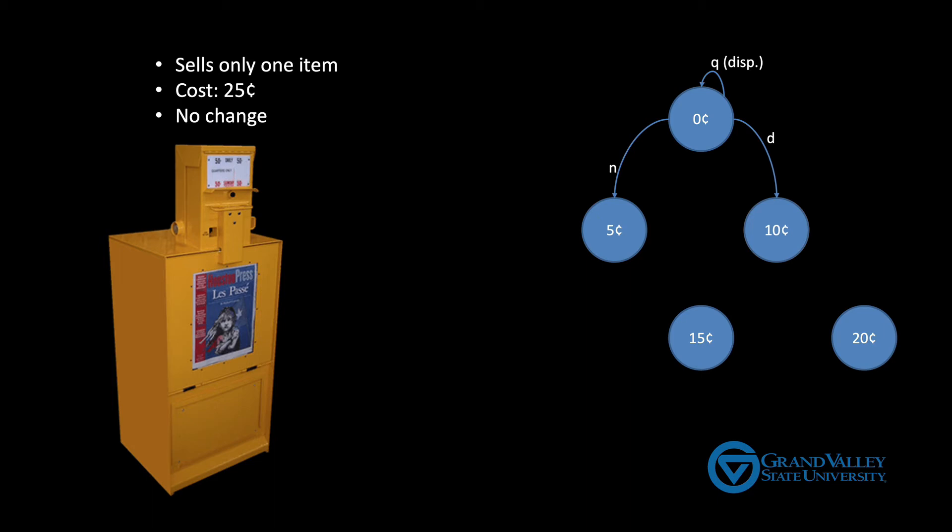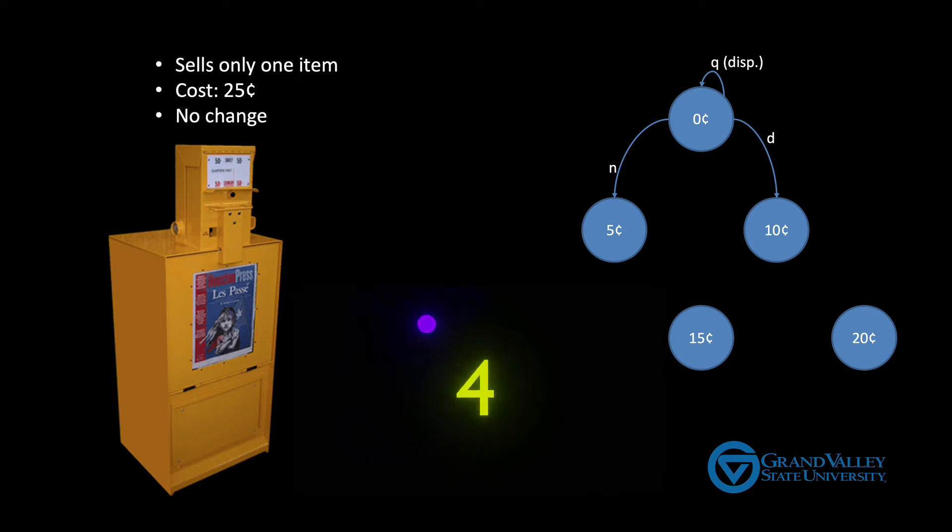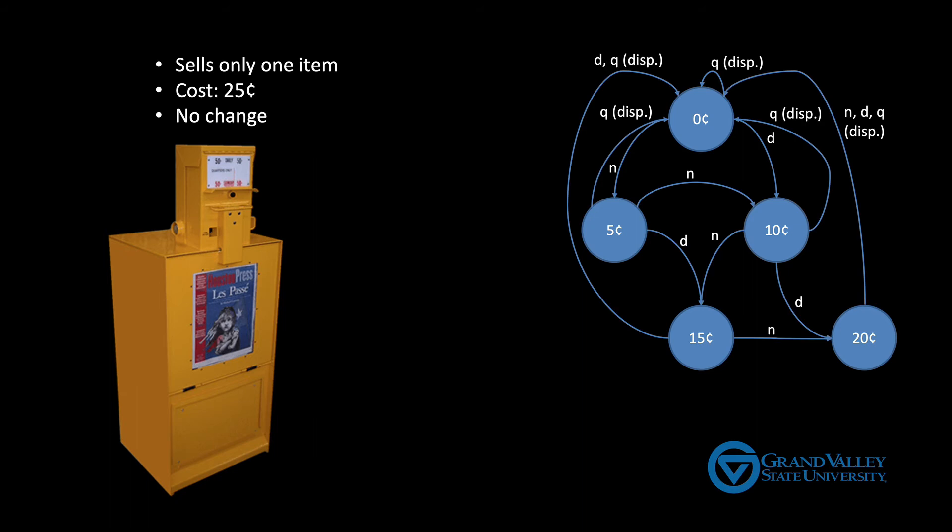But remember, there is more than one way to do this. Now pause the video and fill in the rest of the transitions. So this is what I got. You can see here, for example, that once you've put a nickel in, if you put another nickel in, you end up in the 10 cent state. And if you put a dime in, you end in the 15 cent state. And if you put a quarter in, then you go back to the 0 cent state and get your newspaper, but no change.